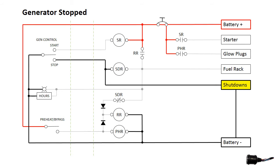Now, let's run the gen set. We begin by holding down the preheat and shutdown bypass switch. This energizes the preheat relay coil, which closes the preheat relay contacts and energizes the glow plugs.